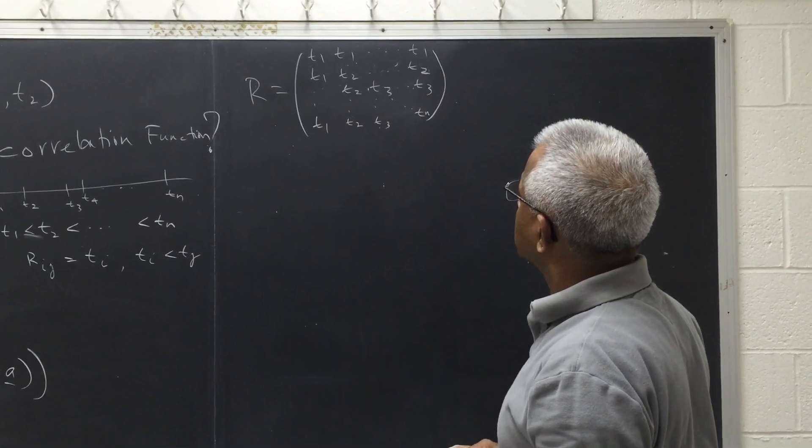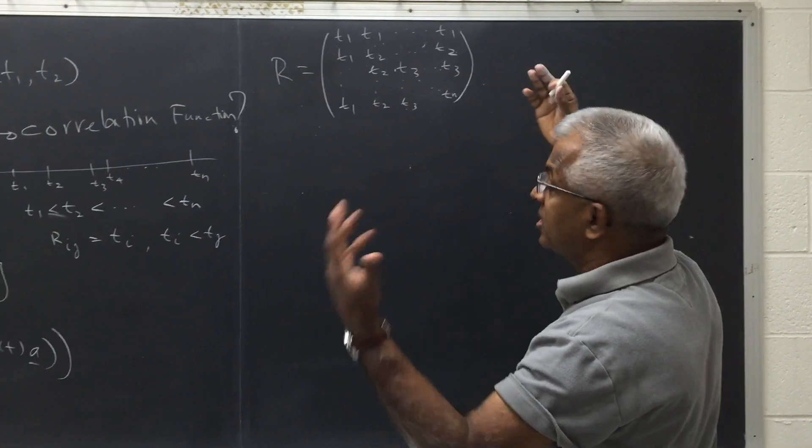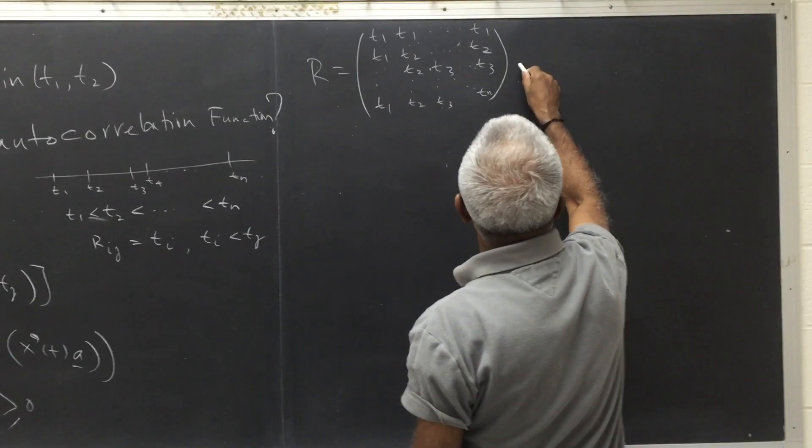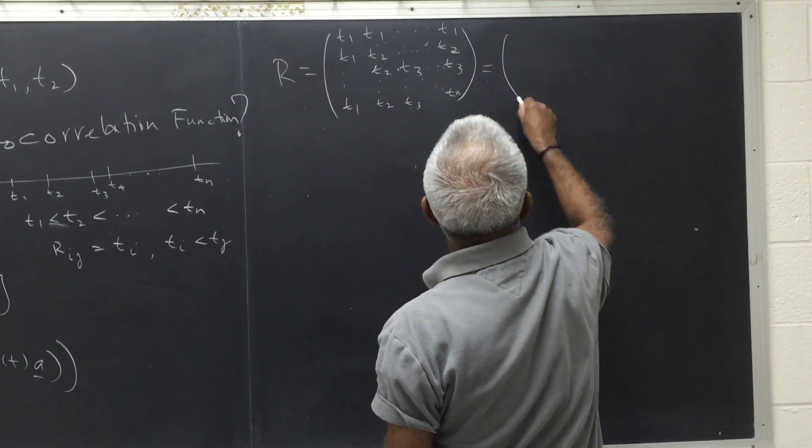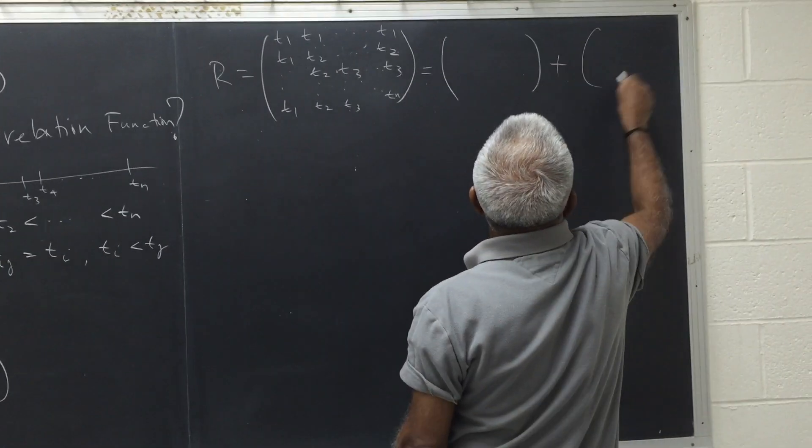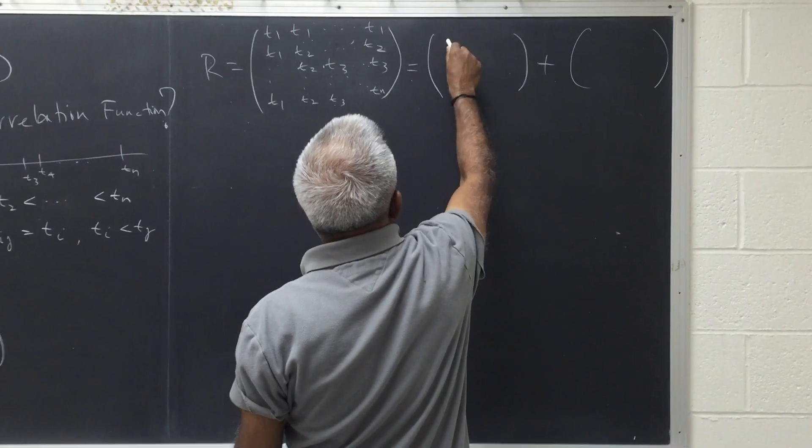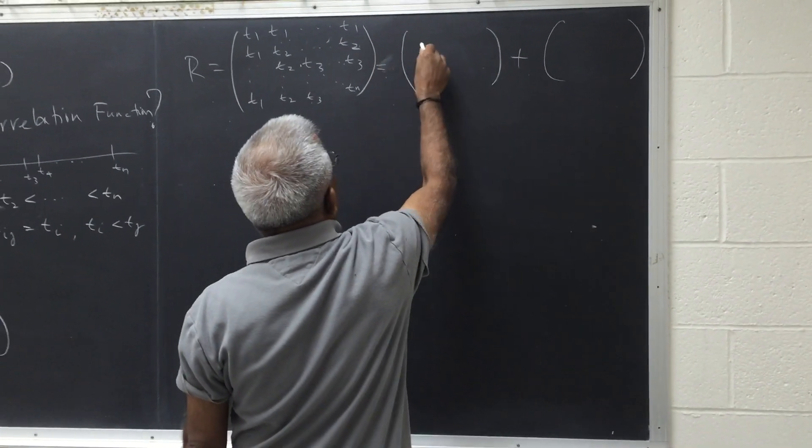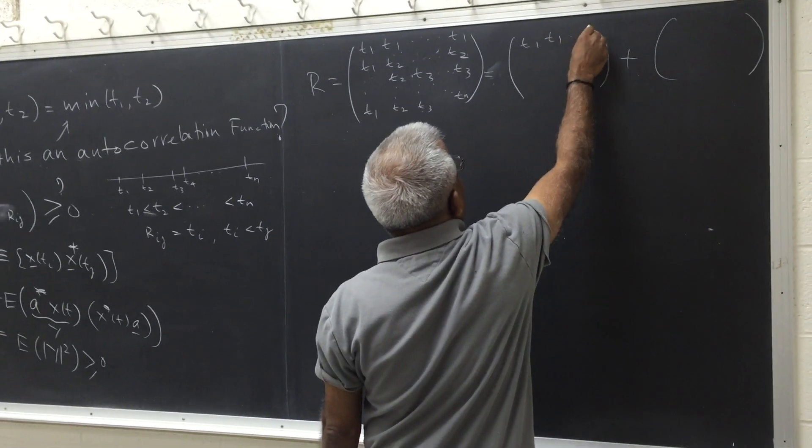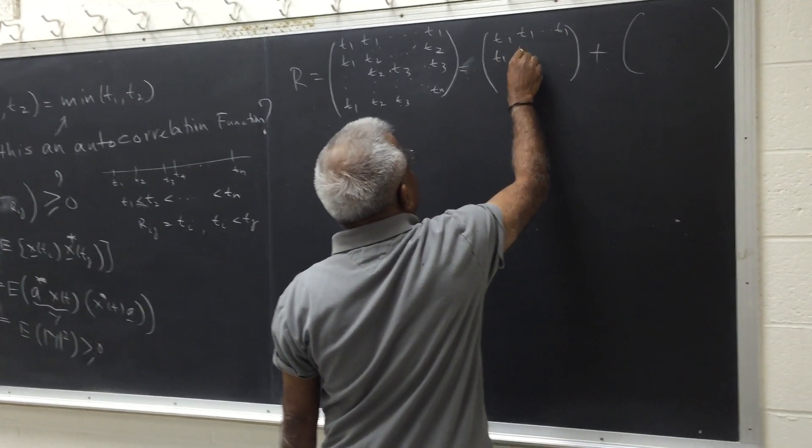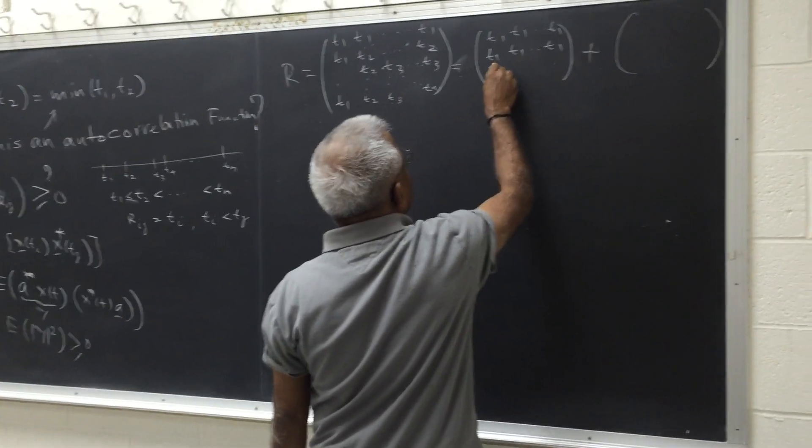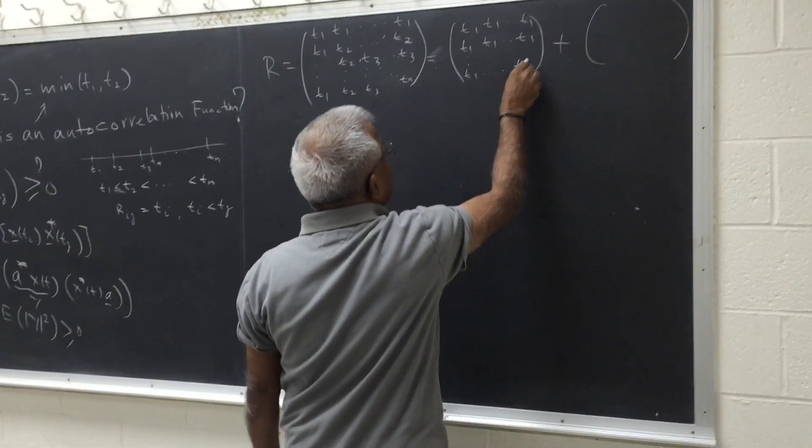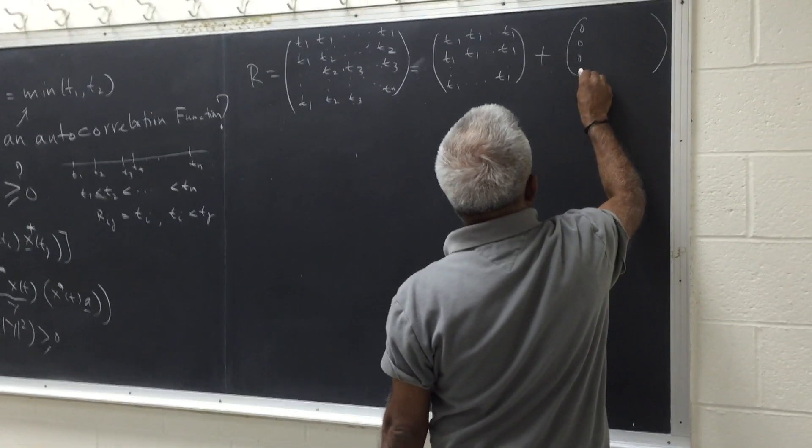So the proof goes like this. You can see that t1, if I pull out the t1 from everywhere, so in other words I can certainly write this as the sum of two matrices. Here it's all, this is all t1, here it will be there. And this will be, of course here it will be all zero.